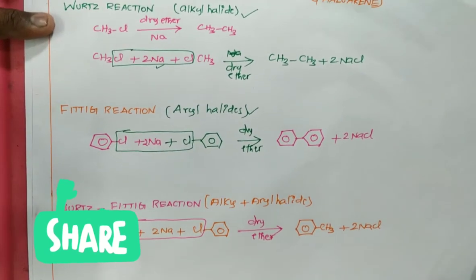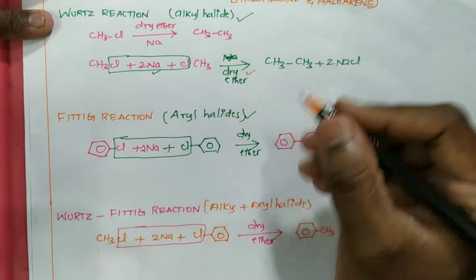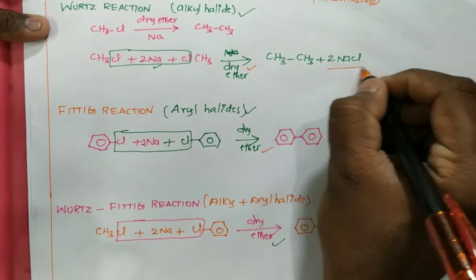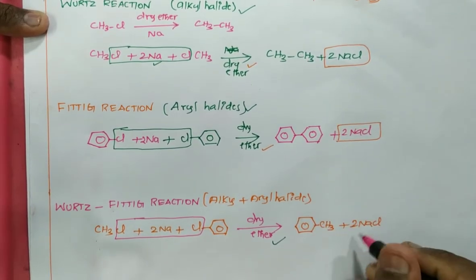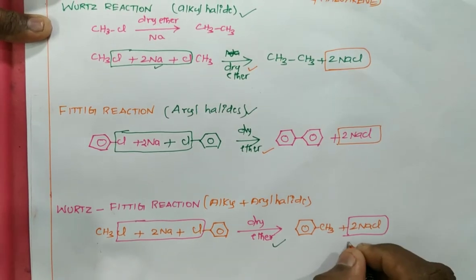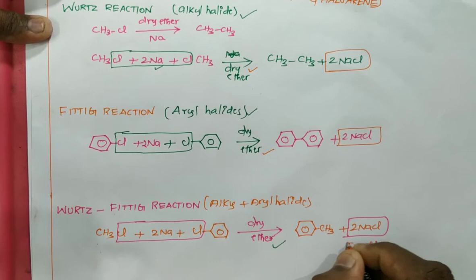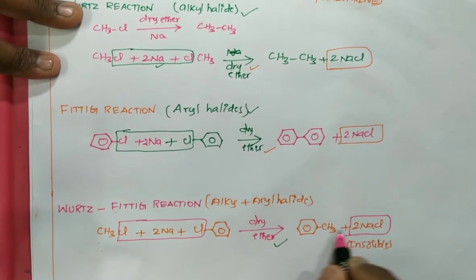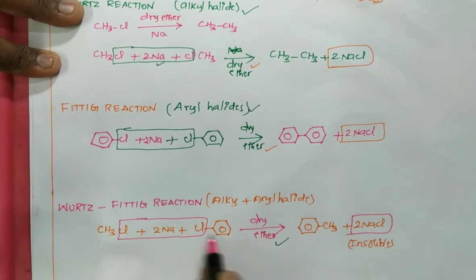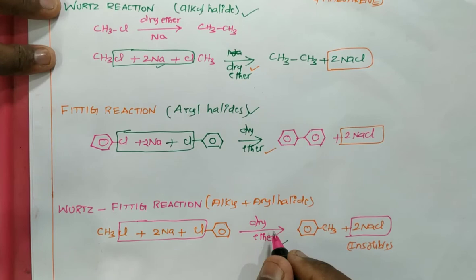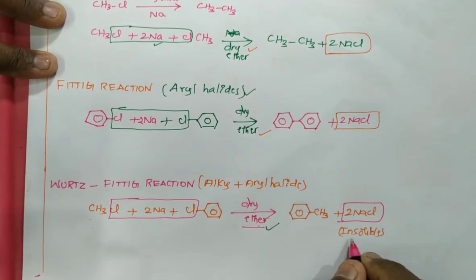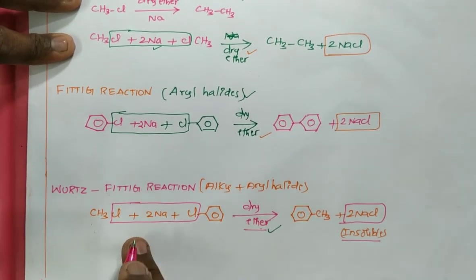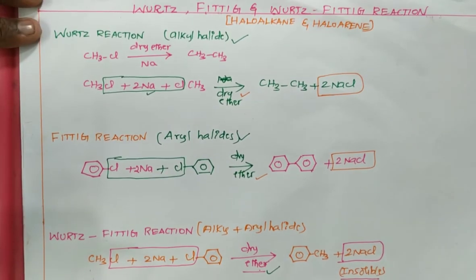One important point to note: in all three reactions, the solvent used is dry ether. Why must we use dry ether? Because one of the products formed is NaCl, which is insoluble in ether. This prevents the backward reaction — if NaCl were soluble, it could react with the product (e.g., toluene) and revert back to the reactants. Since NaCl precipitates out in dry ether, the reverse reaction is avoided. That is why dry ether is used as the solvent.